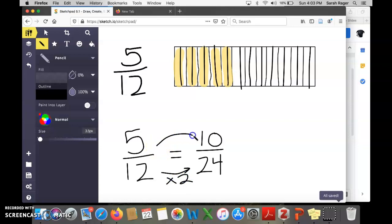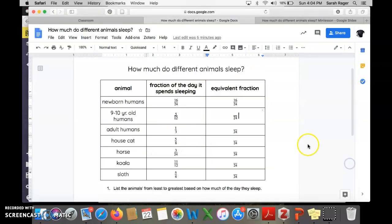To make an equivalent fraction, we multiply the numerator and denominator by the same number of units, just like we did above. So I have to multiply 5 times 2 also. 5 times 2 is 10. That means a 9 to 10 year old needs 10 hours of sleep every day.